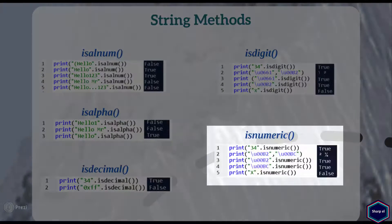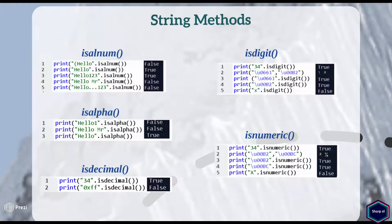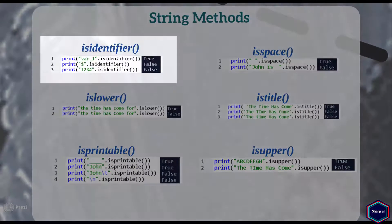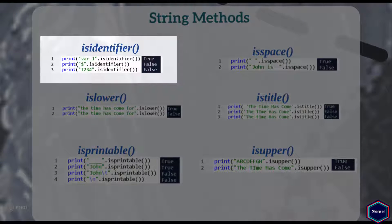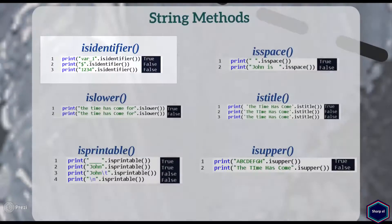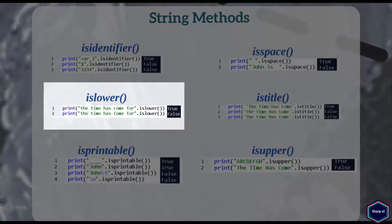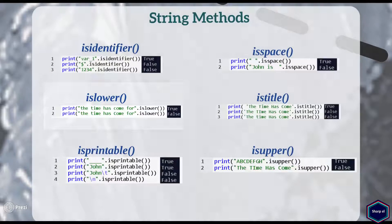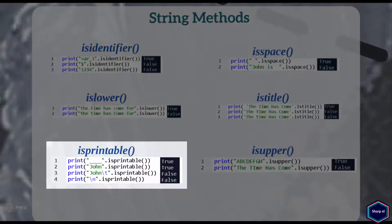The isnumeric method returns boolean true if all characters are numeric, which includes digits, vulgar fractions, subscripts, superscripts, roman numerals, currency numerators, etc. The isidentifier method returns true if the string is a valid Python identifier. The islower method returns true if all characters in the string are in lowercase. The isprintable method returns true if all characters in the string are printable or if the string is empty — for example, newline and tab characters are not printable.